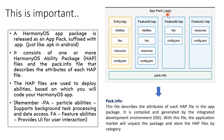The HAP files are used to deploy abilities. We have already discussed what an ability is. There are two types: PA, which is Particle Ability, and FA, which is Feature Ability. Particle Ability supports background task processing and data access. Feature Ability provides a UI for user interaction. So the HAP files are used to deploy these two kinds of abilities.